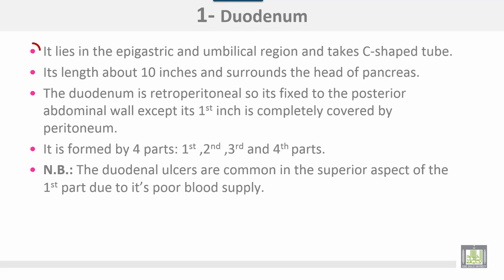The duodenum lies in the epigastrium and the umbilical region and takes a C-shaped form. It is about 10 inches in length and surrounds the head of the pancreas. The duodenum is retroperitoneal, so it is fixed to the posterior abdominal wall except the first inch of the first part, which is completely covered with peritoneum. It is formed by four parts.